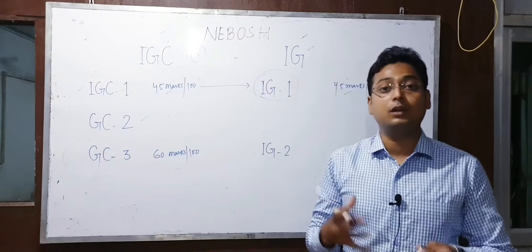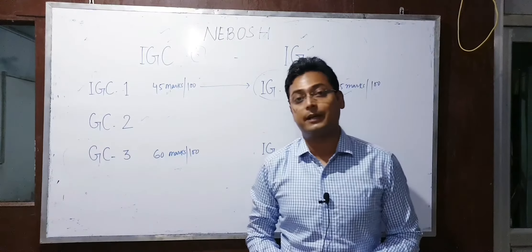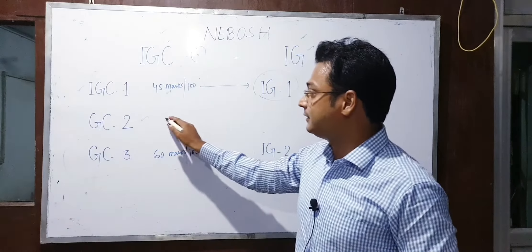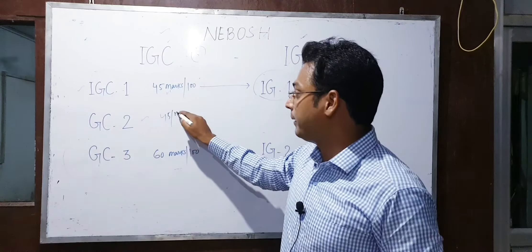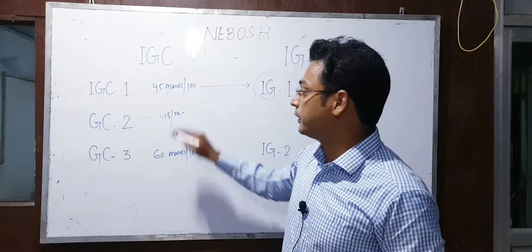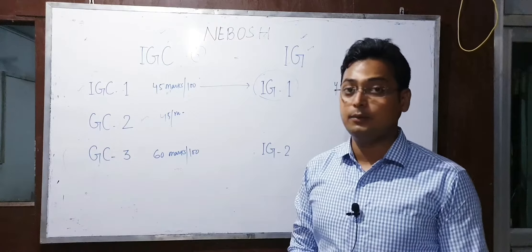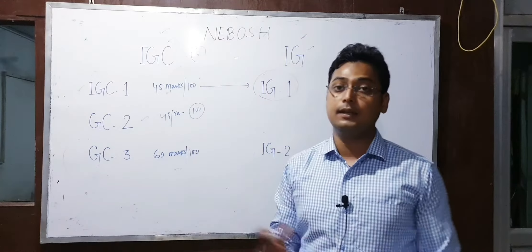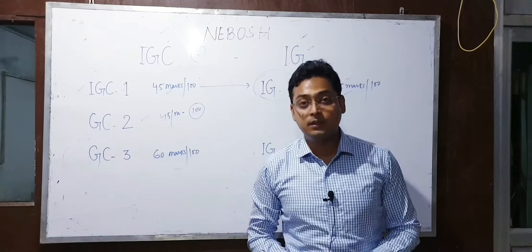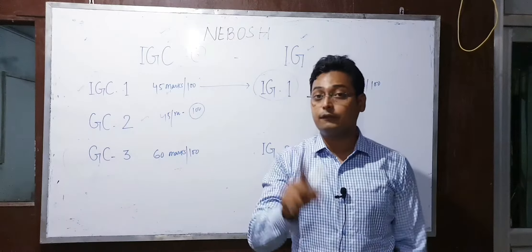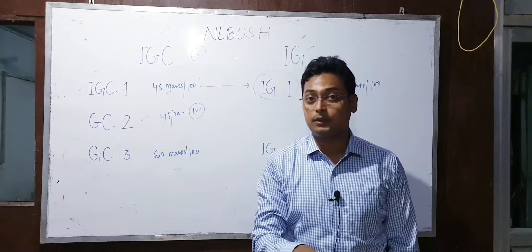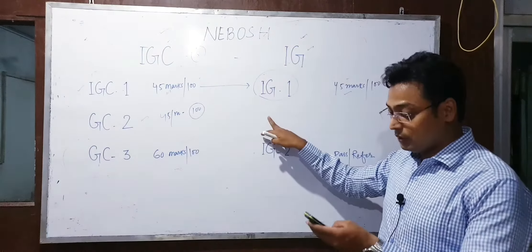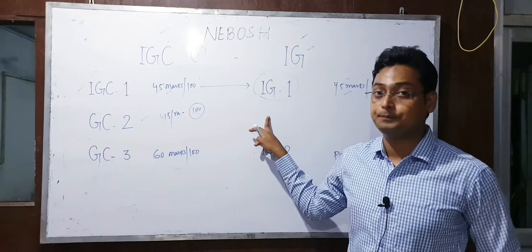Uske baad jo pehla syllabus tha usme GC2 karke paper hota tha Workplace Hazards ke baare mein. Isme aapko pass hone ke liye 45 marks lane hote the aur paper 100 marks ka tha. Abhi naye syllabus mein GC2 ko NEBOSH mein hata diya hai.